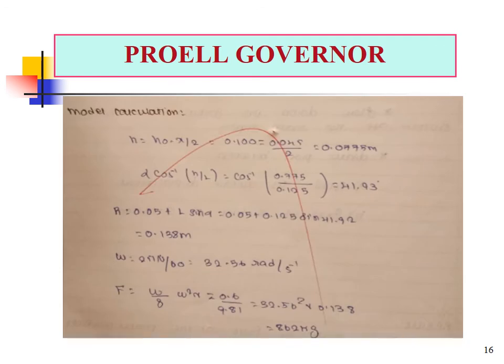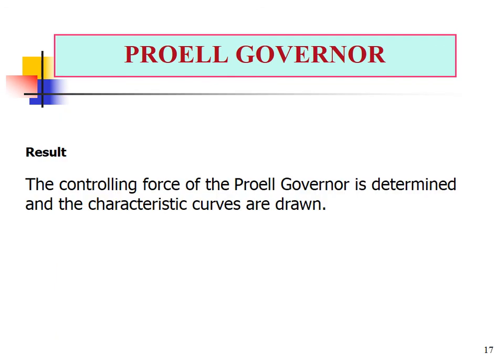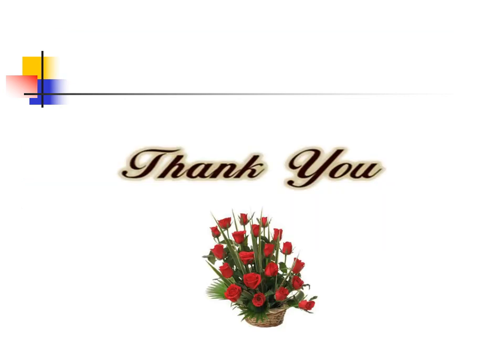The model calculation shows how to calculate h values, alpha values, r values, omega, and finally the controlling force. After completing the model calculations, we draw the characteristic curves for the Proel Governor. Thank you for watching.